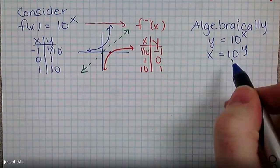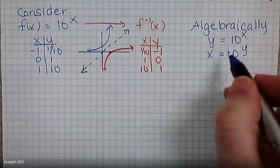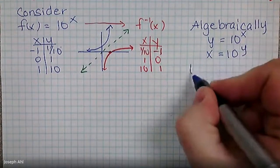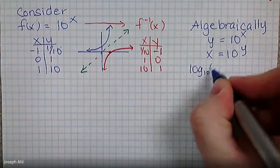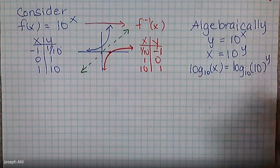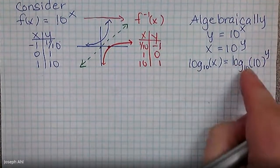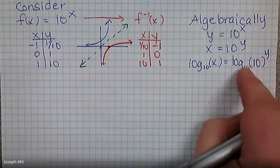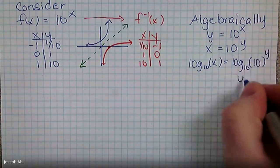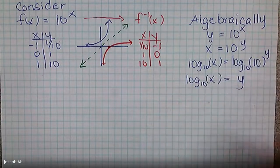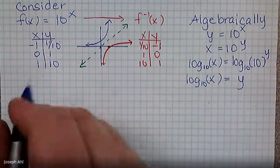Log is an operator like square root, like multiplying or dividing — it's an operation. When I write log of both sides, I'm going to write that it's log base 10. Logs have bases written as subscripts. When you take the log base 10 of an exponential with base 10, these undo one another. So operationally this just leaves me with Y on one side. It turns out the inverse is log base 10 of X.